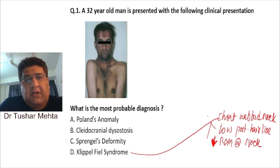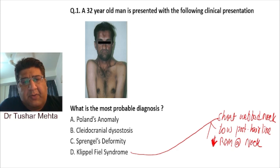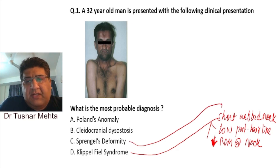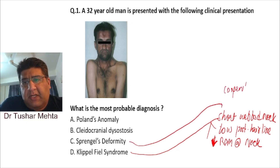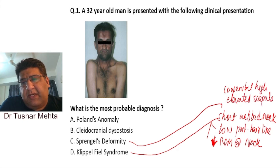The neck looks obvious to me; I don't see any short stature as such. Sprengel's deformity is congenital high elevated scapula on one side — that is Sprengel's deformity — but they have not even shown me the scapula.